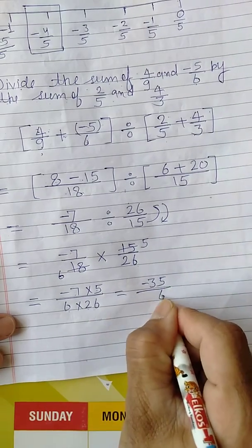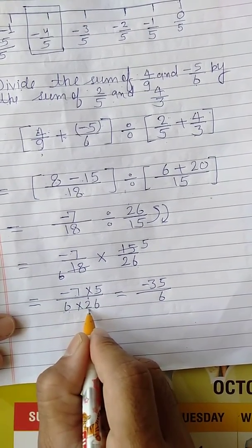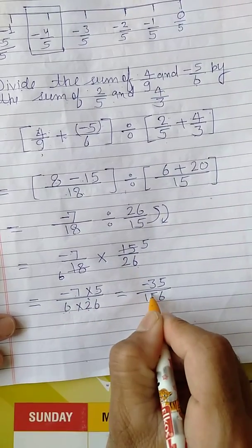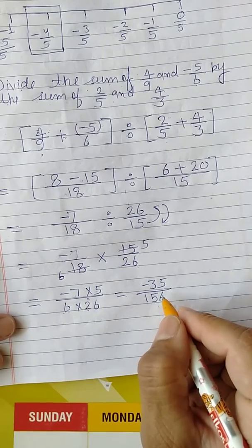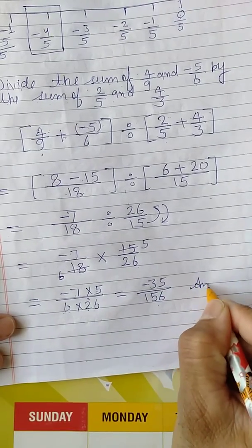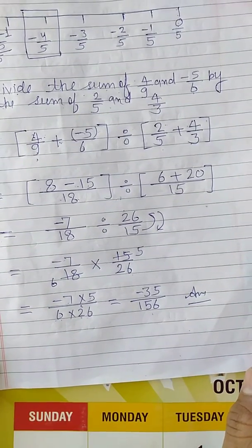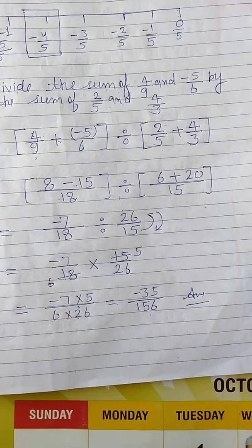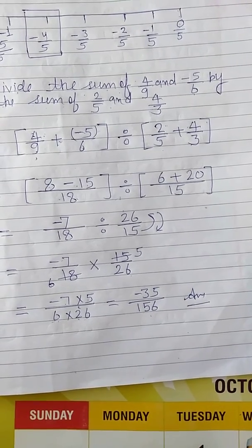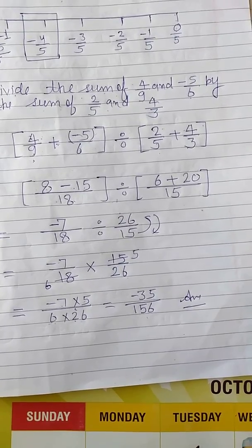6 6 ja 36, carry 3. 6 2 ja 12, 12 plus 3 is 15. This is minus 35 upon 156. This is proper fraction. You may write this answer. This is the way to solve word problems. So if you didn't subscribe, please subscribe. Next thing we will do in next video. Try to solve and try to do in your copies. Thank you.